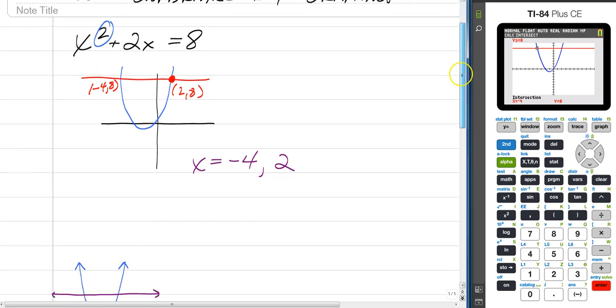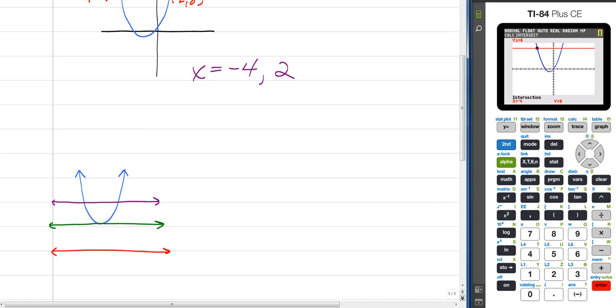So just want to recap something, I just mentioned you could have two, one, or zero. This is what the graphs would look like. If it intersects the graph twice, then you have two solutions. If your graph only has one intersection, like this green line here, you would have one solution. And then the red line doesn't intersect the parabola at all. So you would have no real solutions, but you would have two imaginary.